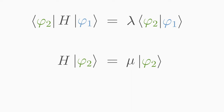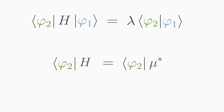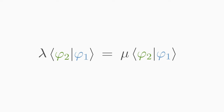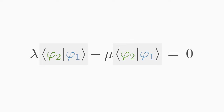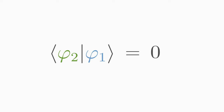In general, we also need to take the adjoint operator of H and complex conjugate the eigenvalue. But we are dealing with the Hermitian operator here, so H-dagger equals H, and mu-star is real, so we can just write mu. Setting our two results equal, putting everything on one side, and factoring out the scalar product: if we assume that the eigenvectors are non-degenerate, that is, they have different eigenvalues lambda and mu, then the scalar product between the two eigenvectors must be zero. The non-degenerate eigenvectors of a Hermitian operator are therefore always orthogonal to each other.